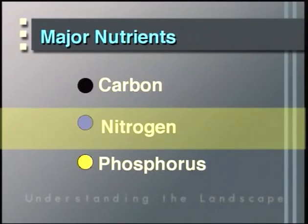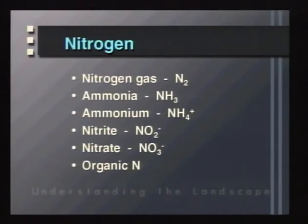Nitrogen compounds are also very important because amino acids and proteins are formed from nitrogen, so all organisms require nitrogen for protein synthesis. Nitrogen can exist in many different forms, only some of which are available to the biota. Nitrogen gas is the most abundant form in the atmosphere — 80% of our atmosphere is nitrogen gas — but unfortunately most organisms can't use it as a nitrogen source. Ammonia or ammonium are therefore used very rapidly and are very important nutrients for plants and other organisms in aquatic and terrestrial ecosystems.